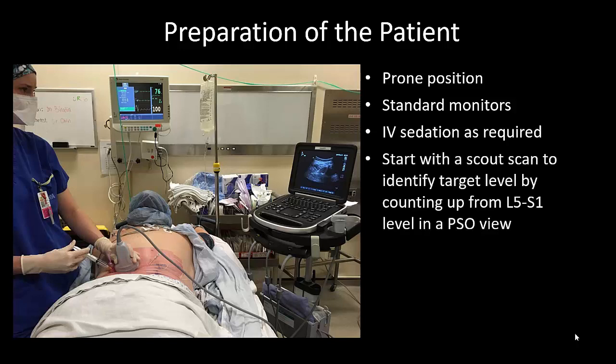We recommend starting with a scout scan using the parasagittal oblique view to identify the L5-S1 interspace and to count up to the desired interspace. For our spinal cord stimulator insertions, this is usually L1-2 or L2-3, which corresponds to the L2 or L3 transverse processes respectively.